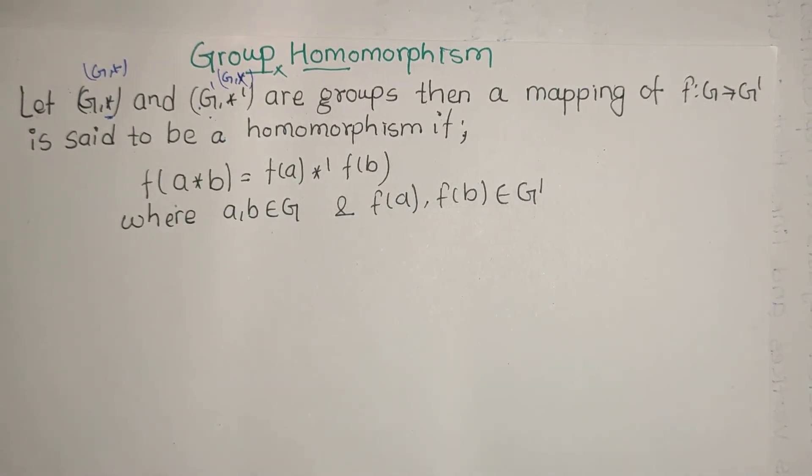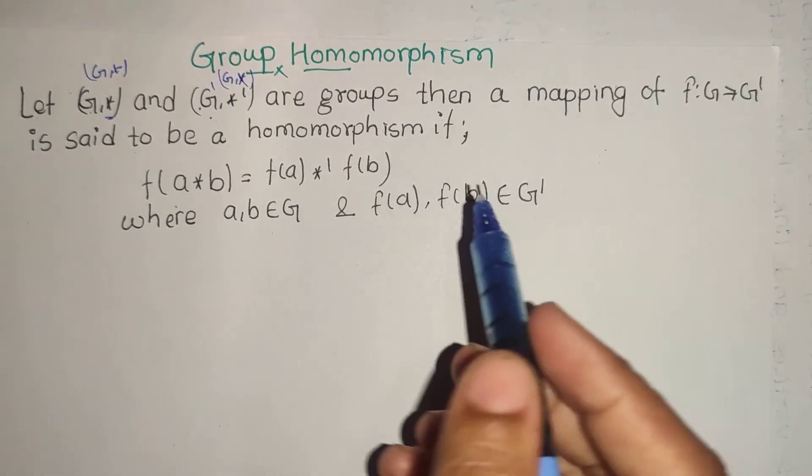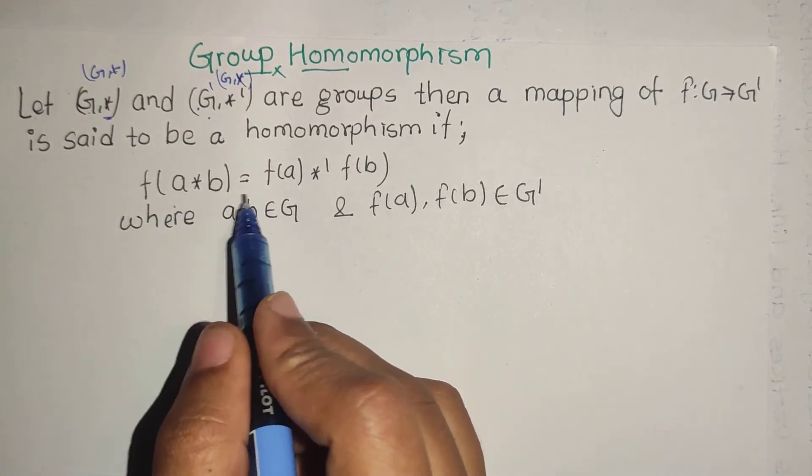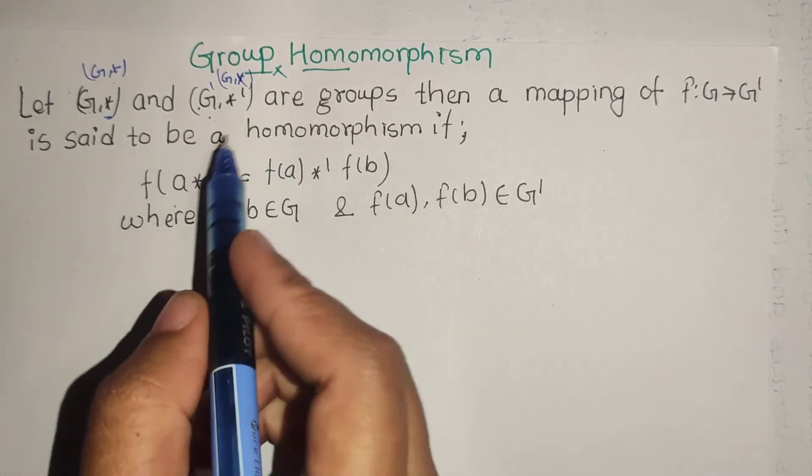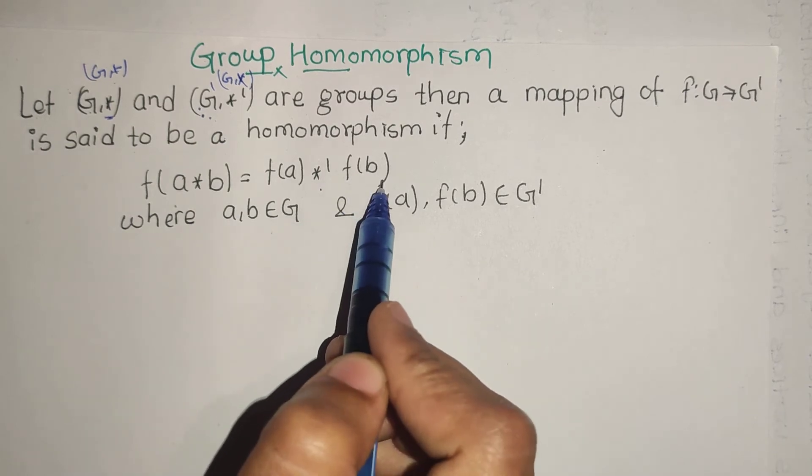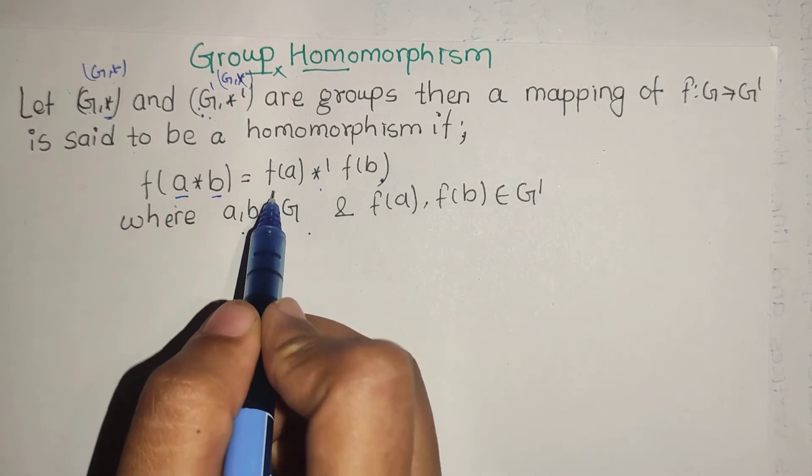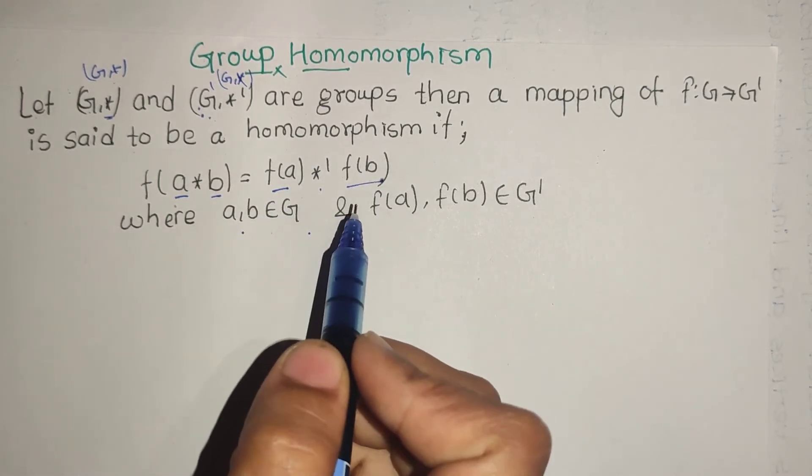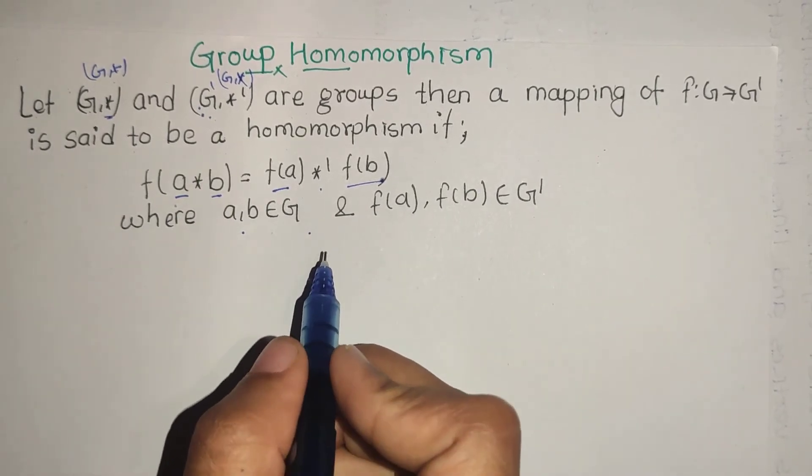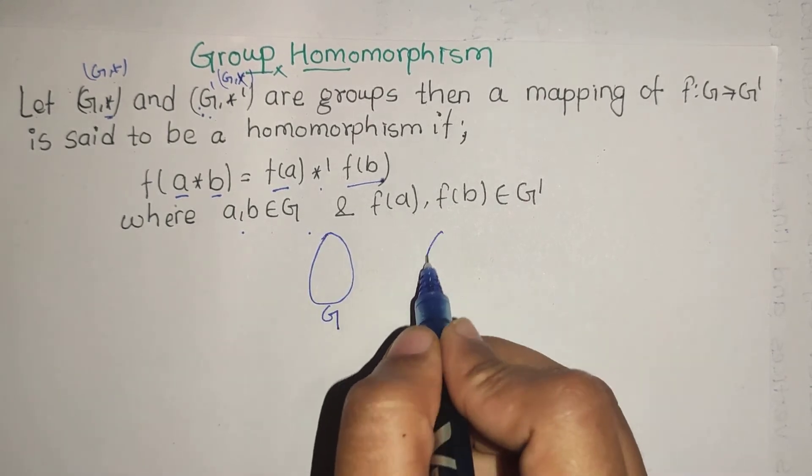Then a mapping f: G → G' is called homomorphism if this condition is satisfied: f(a*b) = f(a) *' f(b). That means the operation in the first group applied to a and b, then mapped, equals mapping a and b separately then applying the second group's operation. Here a,b belong to G, and f(a), f(b) belong to G'.